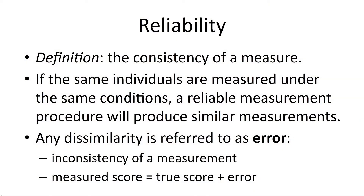The first one I wanted to talk about is reliability, which you could simply define as the consistency of your measure. If the same individuals are measured under the same conditions, a more reliable measurement procedure will produce similar measurements. No measurement device is perfect, and there will be some dissimilarity between your measurements — we refer to that as error, which you can define as the inconsistency of your measurement. Error can be mathematically defined as: measured score = true score + error.